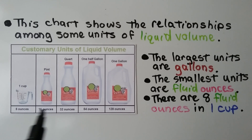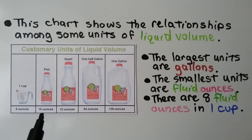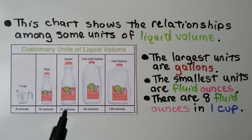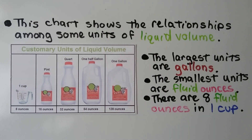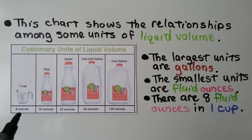Here we have one cup — that's eight ounces of milk. A pint of milk is 16 ounces. A quart is 32 ounces. One half gallon is 64 ounces and one gallon is 128 ounces. The largest unit is gallons and the smallest unit is fluid ounces — there are eight fluid ounces in one cup.